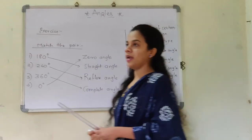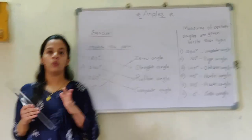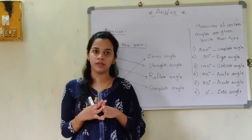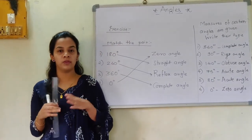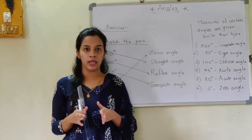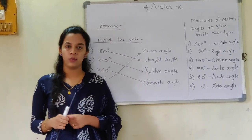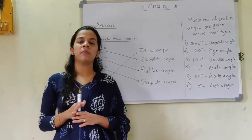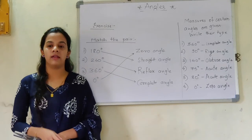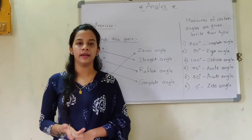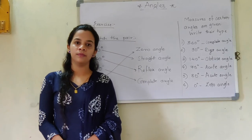So we have studied angles — the name of the angles, the vertex, and the arms. Then we saw 7 types of angles and completed the exercise related to them. The next part of this lesson is about the bisection of an angle, which I will show you later. Just go through these videos. Thank you.